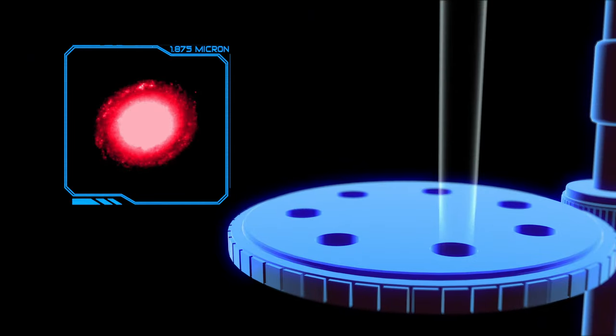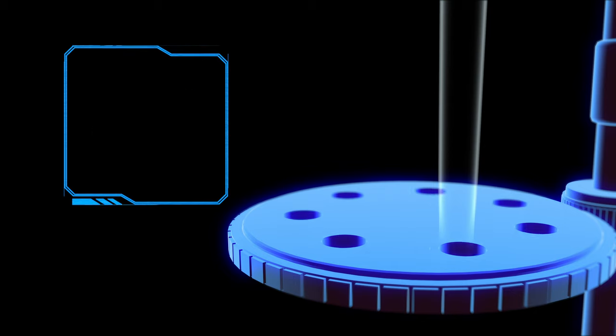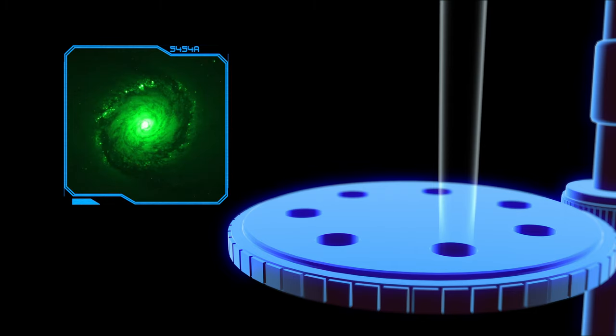This wheel has a variety of filters that allow different wavelengths of light to pass through. It spins from one to another depending on what the researcher is looking for.